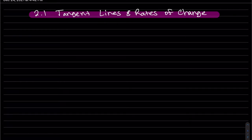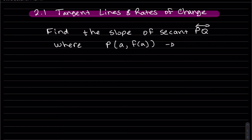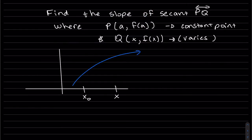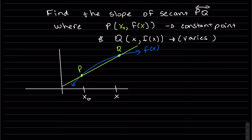This is Chapter 2: Tangent Lines and Rates of Change. Instead of 'a', we can call it x-naught — it doesn't matter. They're both constants. Whenever you subscript a variable, that usually means it's a constant.